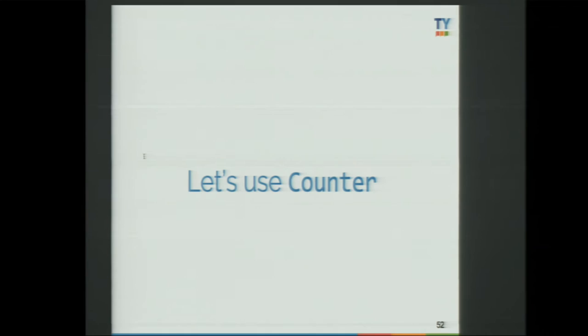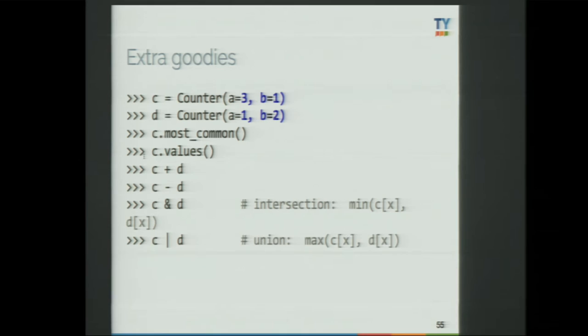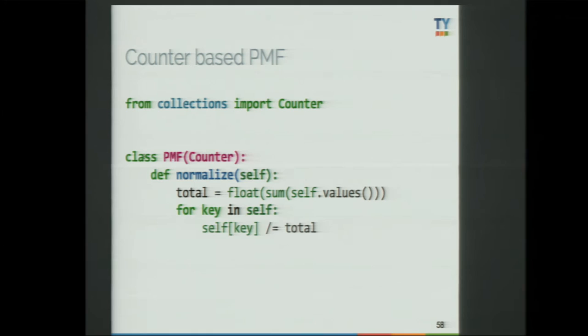But let's use the Counter. Counter is really cool. It's just a defaultdict that is already prepared for counting, and it's free. You pass only the list of items — an iterable — and you just get the counts. Counter comes with extra goodies: you can get the most common values and do some set operations on them. And remember, Counter is a class. You can extend it and add your own behavior. For example, you can add a normalize function to calculate the probability mass function for your items. Easy.